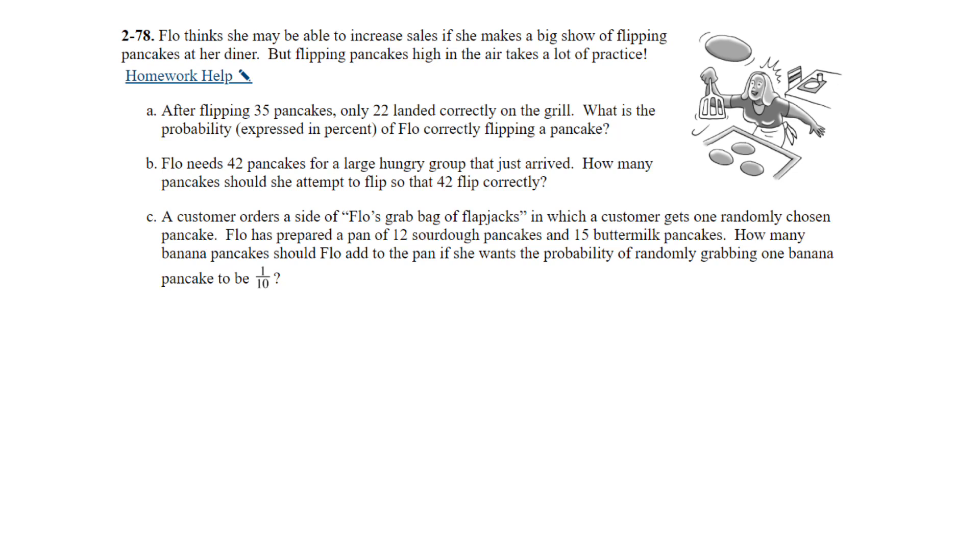Question 78. Flo thinks she will be able to increase sales if she makes a big show of flipping pancakes at her diner. But flipping pancakes high in the air takes a lot of practice. Part A. After flipping 35 pancakes, only 22 landed correctly on the grill. What is the probability expressed in a percent of Flo correctly flipping pancakes? So on part A, if she flips 22 of them correctly out of 35, then we can figure out what the percent is by dividing those two. And so when you divide, you get approximately 63%. Okay, so Flo will correctly flip about 63% of the pancakes correctly.